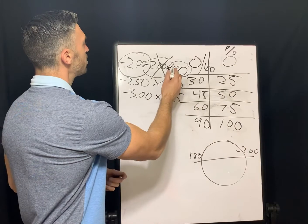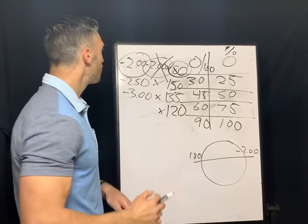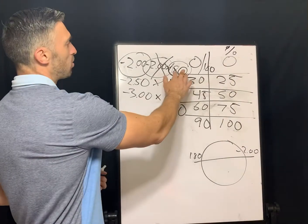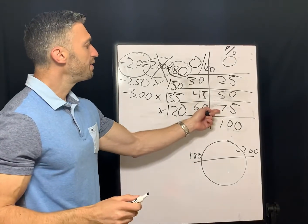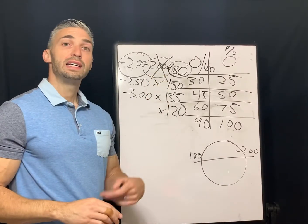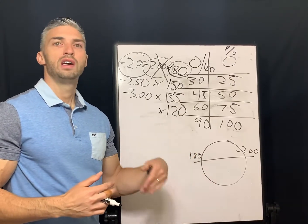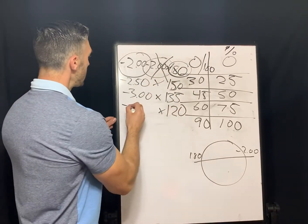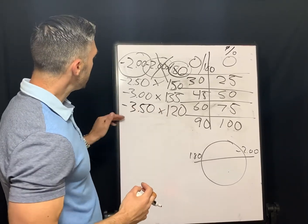Next we have 60 degrees away from the prescribed axis. Sixty degrees away from 180 gives us axis 120. So if the question is what power is present along axis 120, you know that's 60 degrees away from the prescribed axis, meaning 75% of the cylinder power is present. Seventy-five percent of negative 2 is negative 1.50, and negative 1.50 plus negative 2 gives us negative 3.50. The actual power along the 120 meridian is negative 3.50.